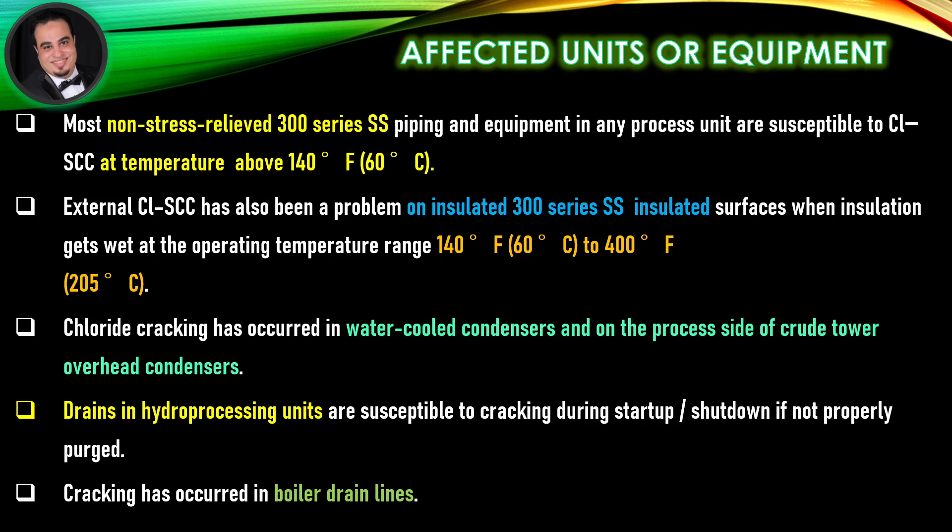Chloride cracking has occurred in water-cooled condensers and on the process side of crude tower overhead condensers. Drains in hydroprocessing units are susceptible to cracking during start-up and shutdown if not properly purged. Cracking has also occurred in boiler drain lines.